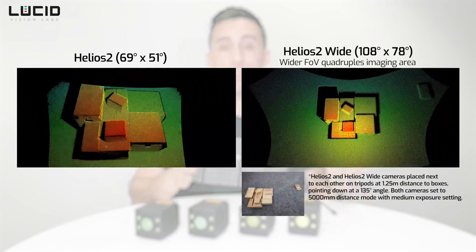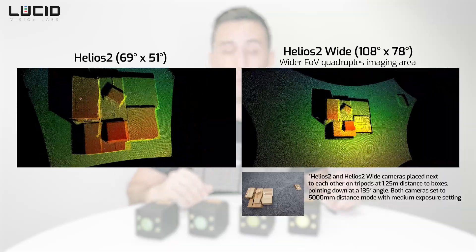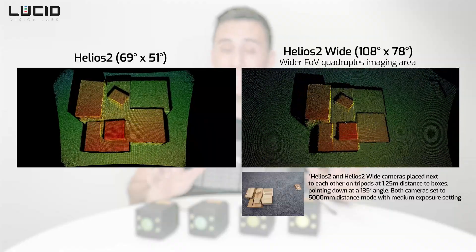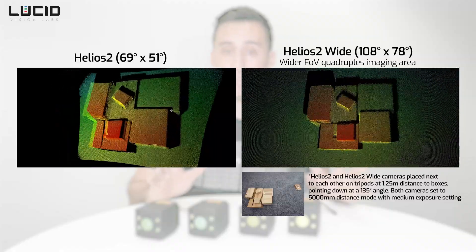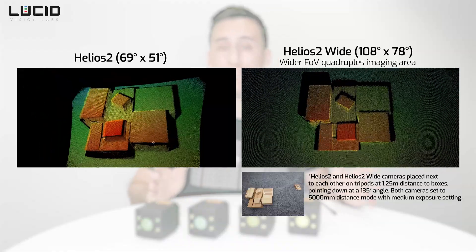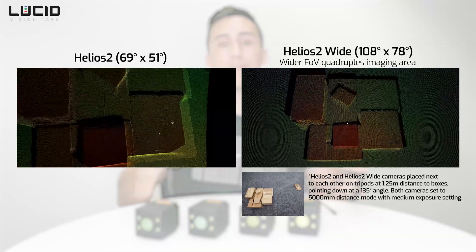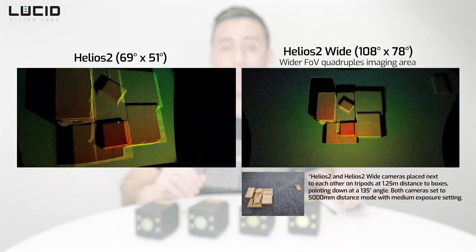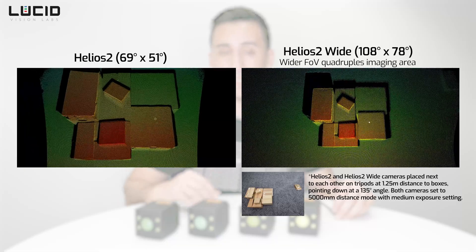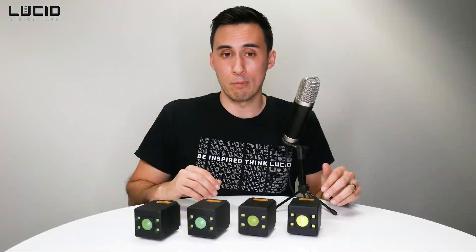The Helios II Wide is great for users who want to reduce the number of 3D cameras needed for an application. There is a trade-off, though. Even though the Helios II Wide is equipped with more powerful VCSELs than the Helios II and II Plus, we're still imaging a much larger area. The VCSEL laser light is more spread out, reducing the amount of light reflecting off an object and back to the sensor — resulting in reduced accuracy and precision with this model.